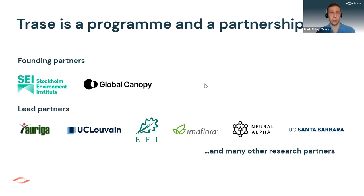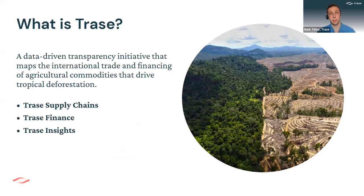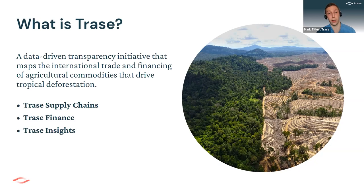As well as that, we work with a variety of other partners, which include NGOs in producer countries — that includes Auriga in Indonesia and Imaflora in Brazil. We also work with a variety of research partners and academic institutions around the world. I should also acknowledge our several funders, without which none of this work would be possible. TRACE is a data-driven transparency initiative that maps the international trade and financing of agricultural commodities that drive tropical deforestation. If you go to our website at trace.earth, you can find three kinds of information: our TRACE supply chains, which map connections between tropical deforestation and consumer markets; TRACE finance, on the financing of these supply chains; and TRACE insights, where we produce specific pieces of analysis, policy briefs, and case studies.